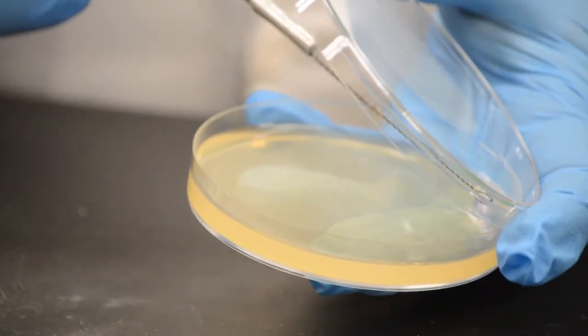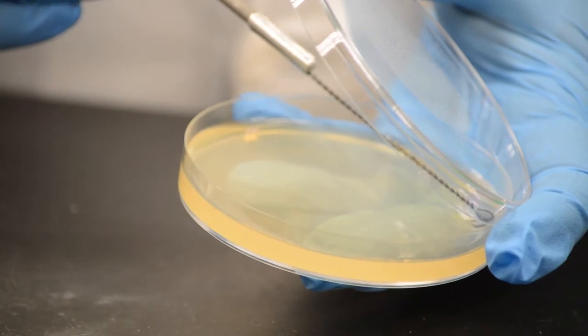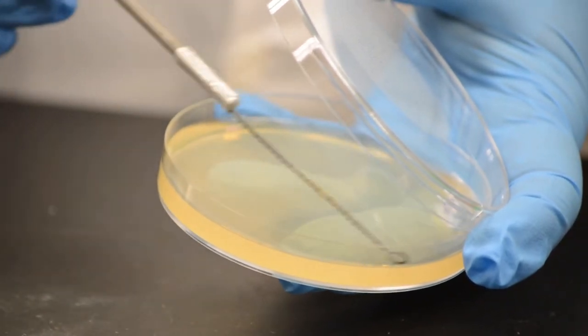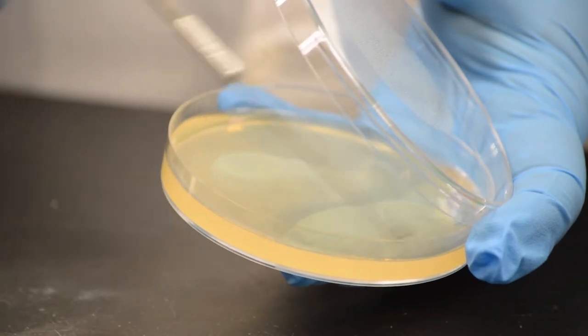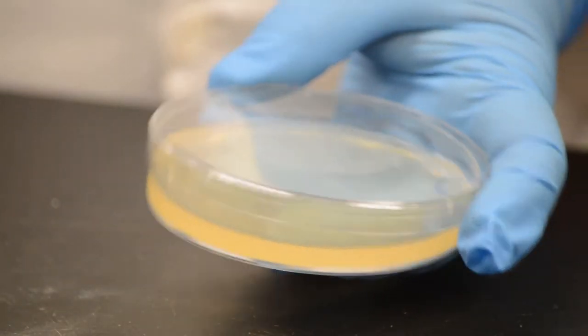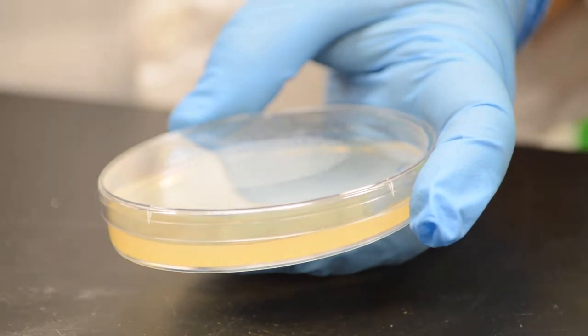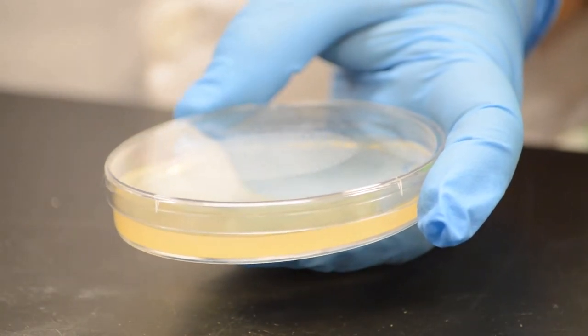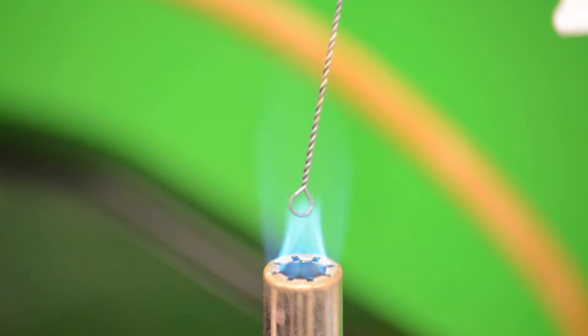Raise the lid just enough to put the inoculating loop inside. Holding the loop like a pencil, carefully smear the suspension in a thick streak on one section of the dish as indicated. Close the lid of the petri plate.